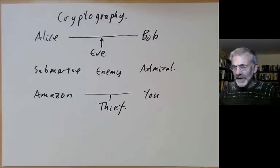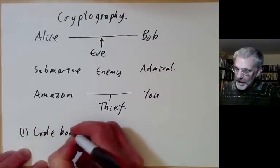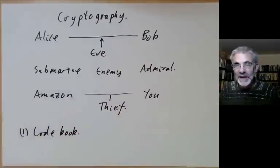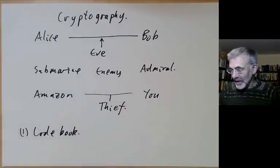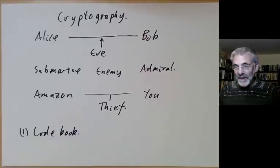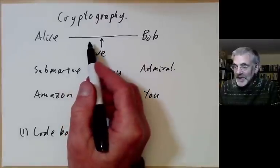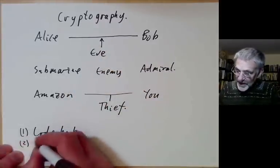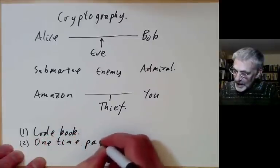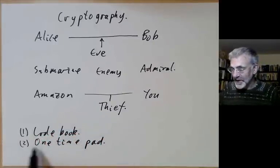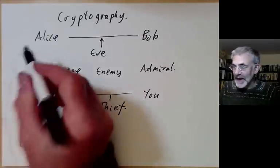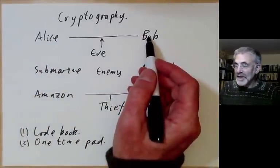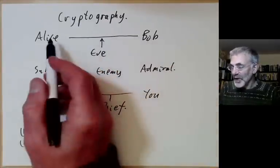There's a traditional way of doing this: Alice and Bob agree on something in advance. For instance, there could be a code book — this was often used by submarines in the Second World War, where a message like AAAAA means 'attack at dawn.' Another method is a one-time pad, which is a collection of supposedly random numbers that Alice and Bob use to encode messages so Eve can't decode them.